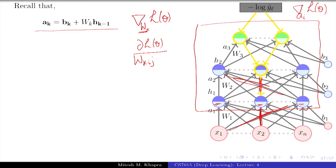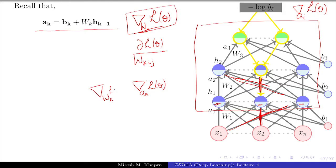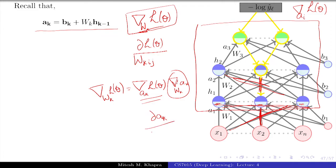From here, applying the chain rule: we already know the gradient with respect to the pre-activation a_k, and from the pre-activation we go to the weight w_{k,i,j}. So the chain rule gives us the gradient of the loss with respect to w_{k,i,j} as the product: the gradient of the loss with respect to a_k, times the partial derivative of a_k with respect to w_{k,i,j}. This is the quantity we are looking for.